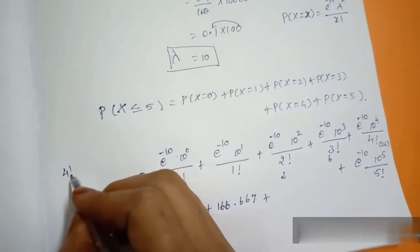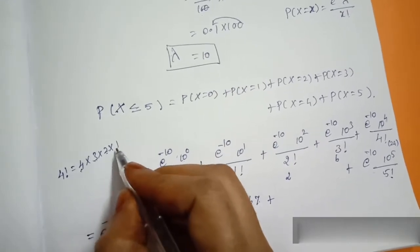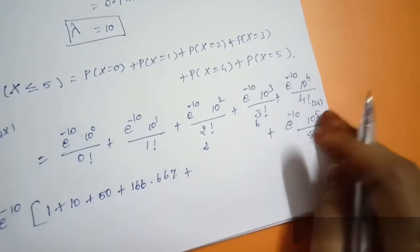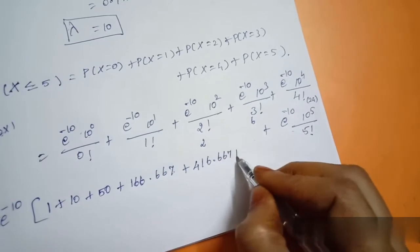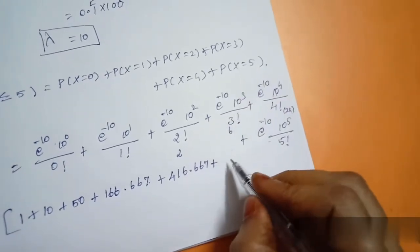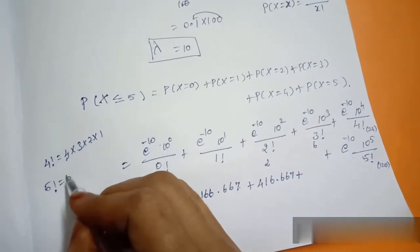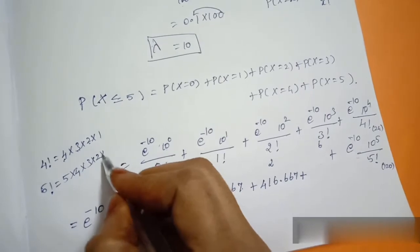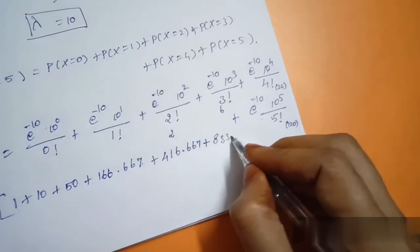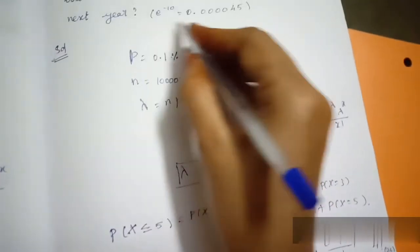Continuing: 10^4 divided by 4 factorial, and 10^5 divided by 5 factorial. Note that 4 factorial equals 4 × 3 × 2 × 1 = 24, and 5 factorial equals 120. Computing all terms and summing gives 1477.667. Multiplying by e^(-10) common factor gives the result.